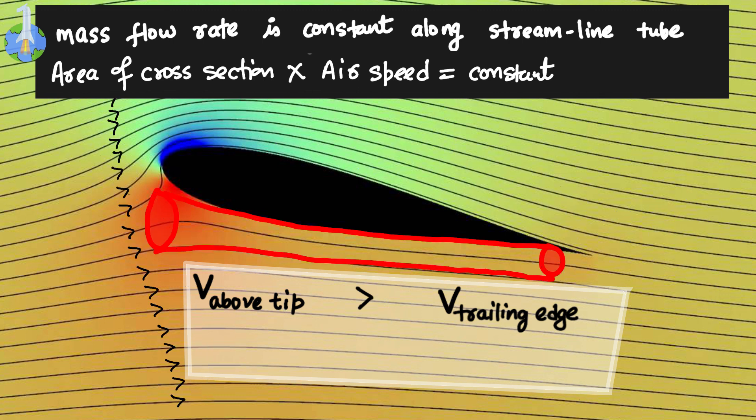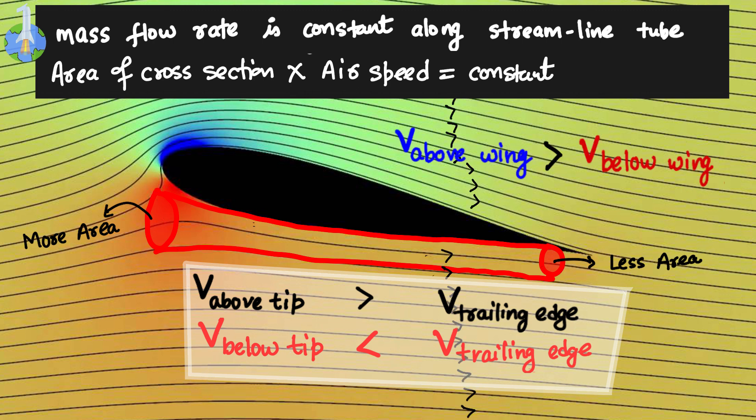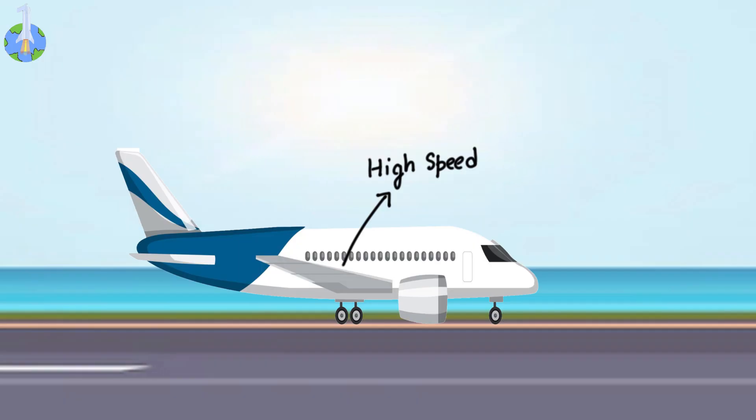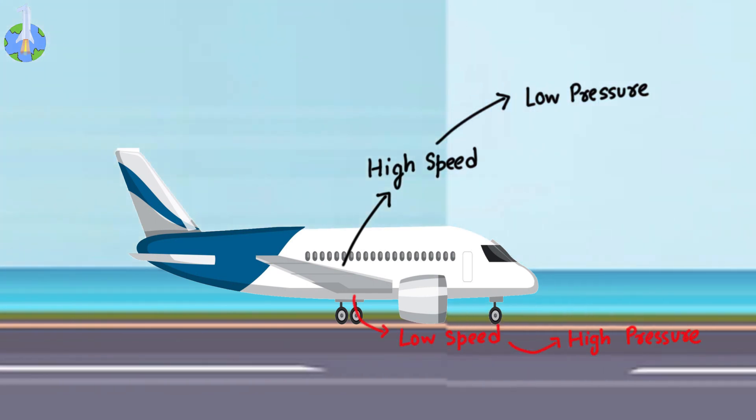Consider another imaginary stream tube below the wing. Air below the tip is less dense, more spread. So according to the mass flow continuity, the speed of air must be slower at the bottom of the wing than that of the trailing edge. The high speed of air above the wing causes low pressure and the lower speed of air beneath the wing causes high pressure.